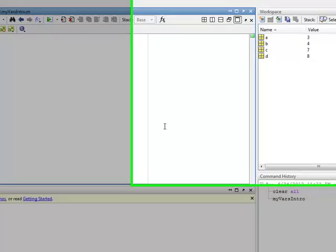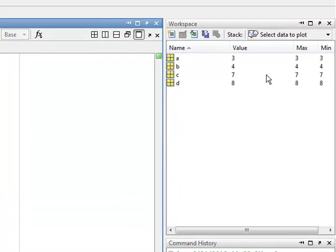Now, what I want you to notice is over here in the workspace area. So, I've made these variable assignments here in the editor, and now over here in the workspace area, you notice that it has these names, and these are the names of my variables. And then it has the value of that variable, and it talks about the max and the min, which really, since we're only doing one number, they're the same thing.